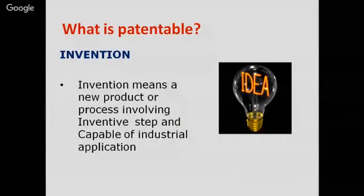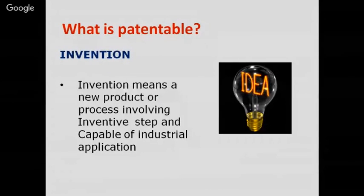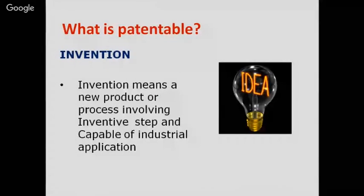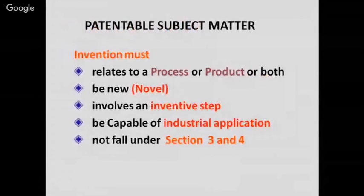What is patentable? An invention is a new product or process involving an inventive step and capable of industrial application. The invention must relate to a process, a product, or both. It should be new — that is, novel — involve an inventive step, be capable of industrial application, and must not fall under certain categories under Sections 3 and 4.